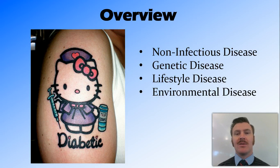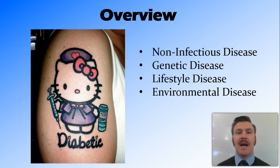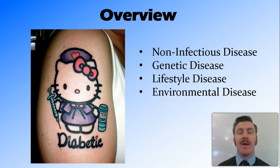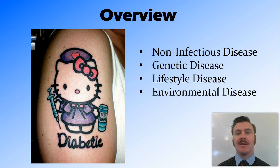In this video we've talked about non-infectious diseases — diseases not caused by a pathogen and therefore not transmissible from person to person. We've looked at the three categories: genetic diseases passed on from parent to child, lifestyle diseases caused by your lifestyle, and environmental diseases caused by exposure to hazards in the environment. We've also talked about how these categorizations can be a bit wishy-washy at times.